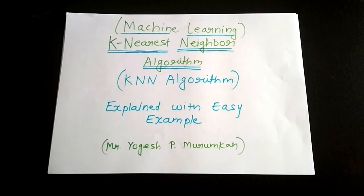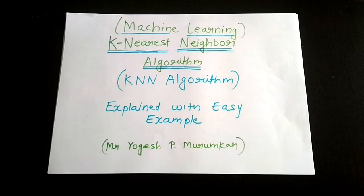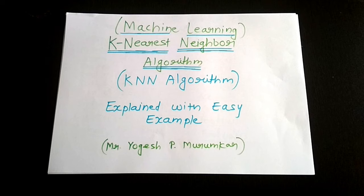For the data record that needs to be classified, KNN computes the distance between that record and all of the reference data records. It then looks at the K closest records. For example, if K equals 5, it looks at the 5 closest records, and whatever is the majority class among those K records becomes the predicted class.